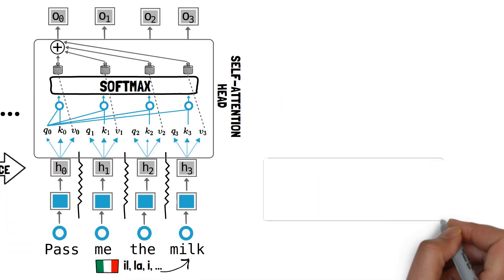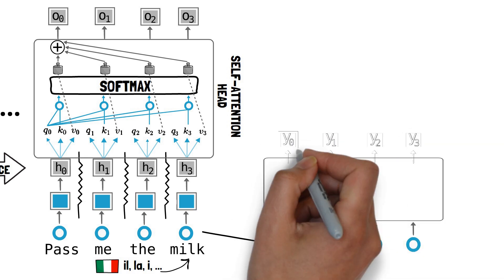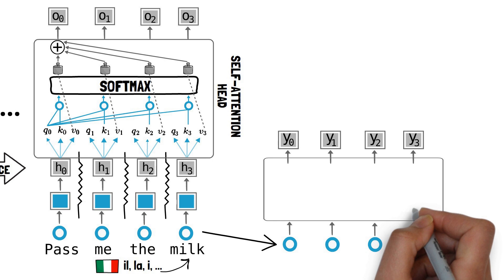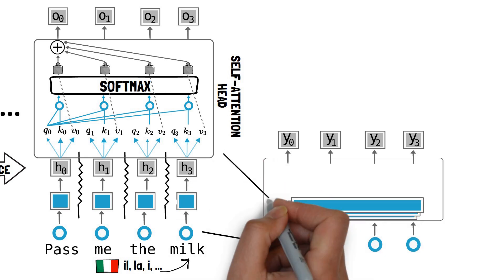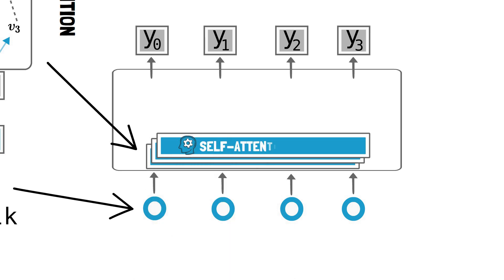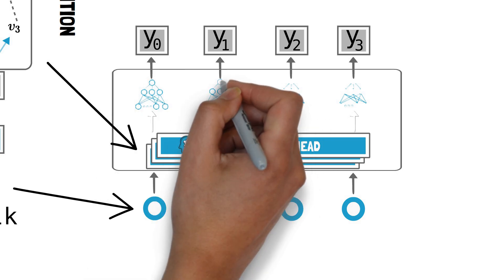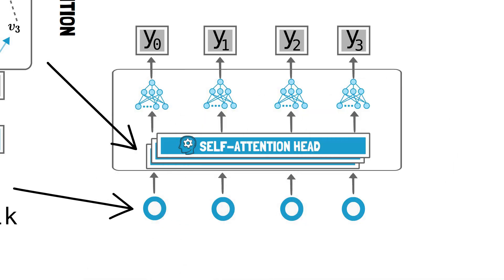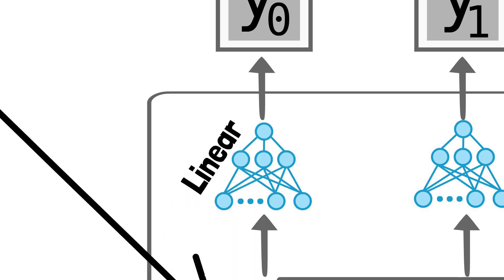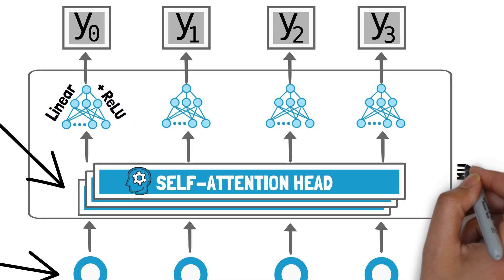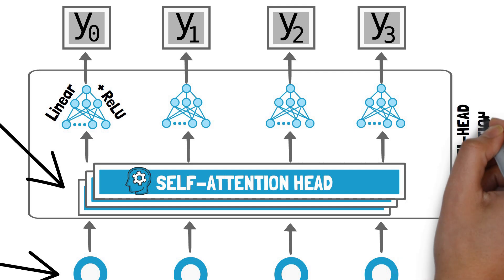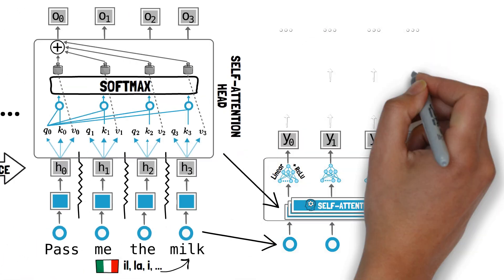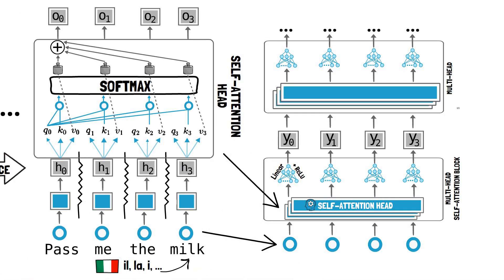If we zoom out, the entire self-attention layer takes the input words and computes a hidden representation for each of them. As we saw before, this layer typically contains multiple attention heads with their own learnable parameters. This gives each head the ability to potentially focus on different aspects of language. Then, we simply concatenate all the attention head outputs and pass them through a multi-layer perceptron, usually just a single feedforward layer, followed by an activation such as ReLU. This constitutes a multi-head self-attention block. Finally, we can stack multiple self-attention blocks on top of each other to deepen our network.